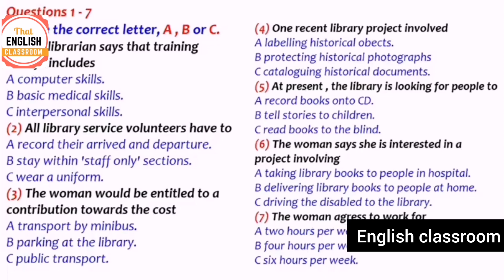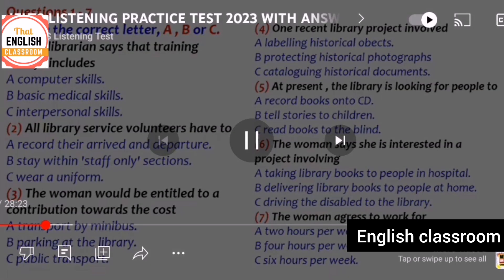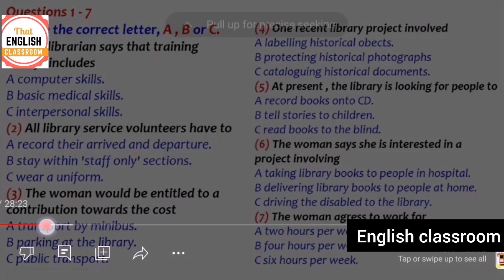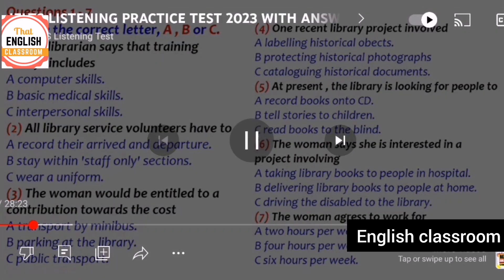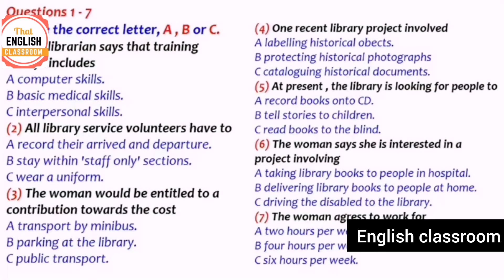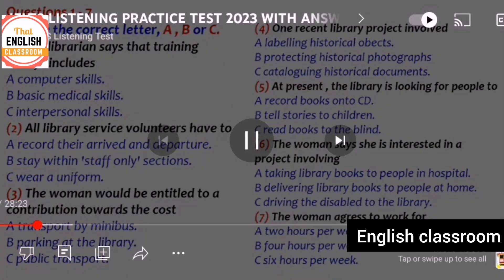So if she uses public transport she will get the contribution towards her travel costs. That means the answer to question three is C — public transport.